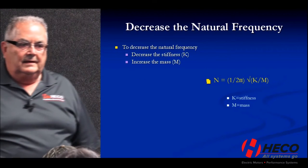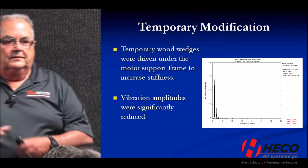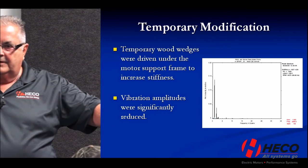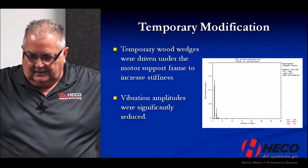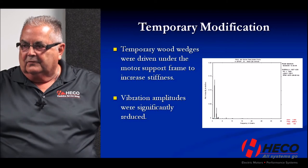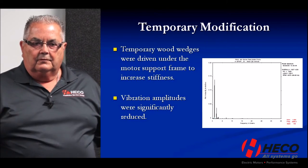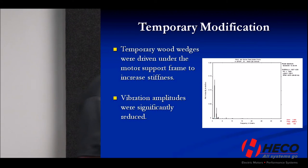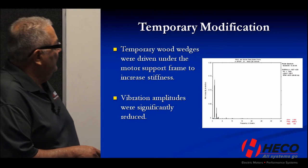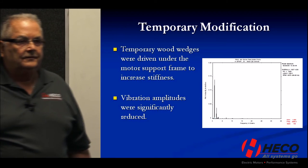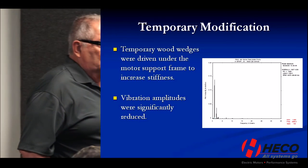What we did was put some temporary wooden wedges and drove them in under the support frame. The setup had a concrete pedestal, two pieces of I-beam, and a piece of channel iron across the top — the motor was bolted down to that channel. All we did was put two-by-four wooden wedges in the center between the channel and the concrete base. The vertical vibration amplitude went from 0.5 inches per second down to about 0.14 inches per second — without ever shutting the motor down. Nothing fancy at all, just wooden wedges.